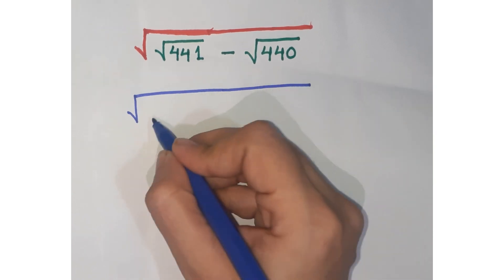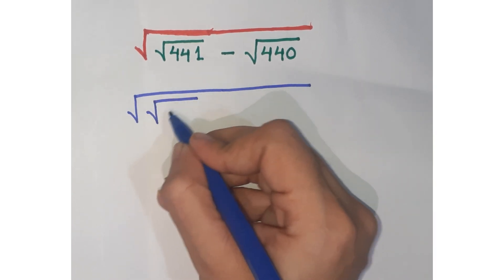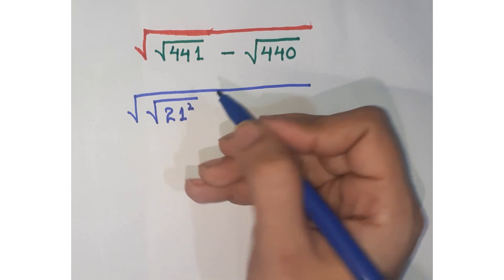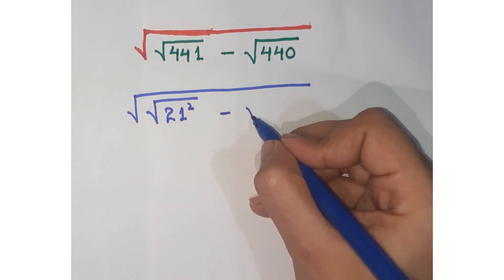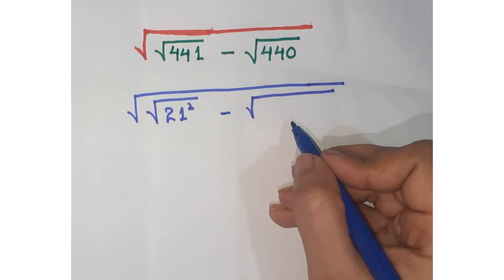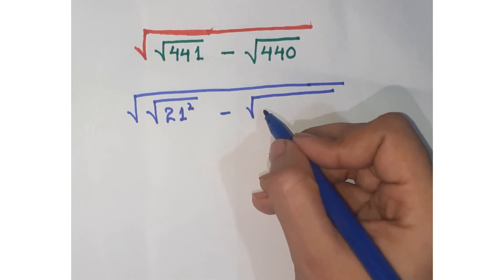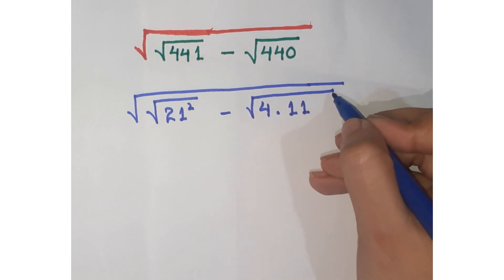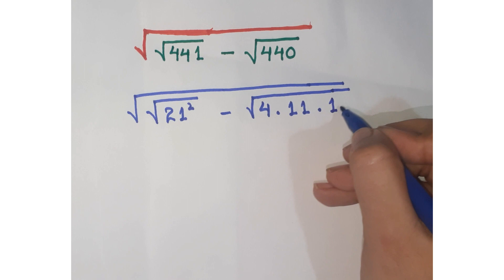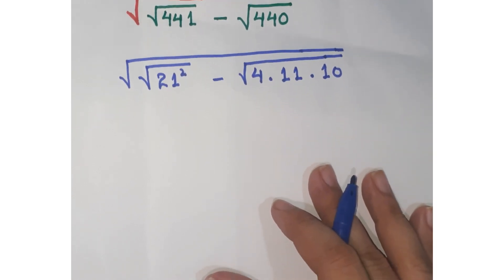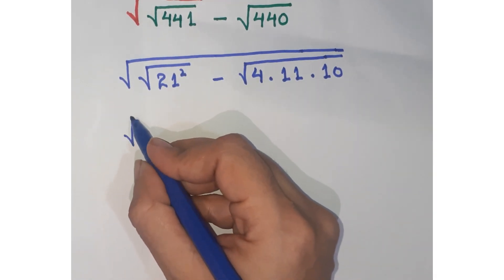As you know, 441 is a perfect square of 21, so you can write it as 21 squared. Further, you can break up 440 as 4 × 11 × 10, since 4 × 11 = 44, multiplied by 10 gives 440.